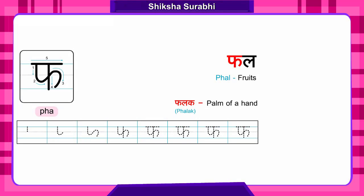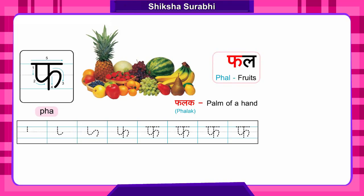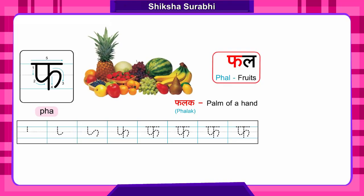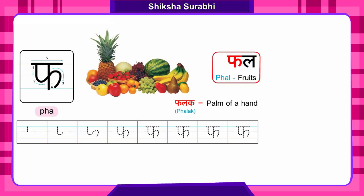The next letter is Faa. Faa say Fal. See the first word, Fal. What is Fal? See the picture. What do you find? A lot of fruits, isn't it? Fal means fruit.